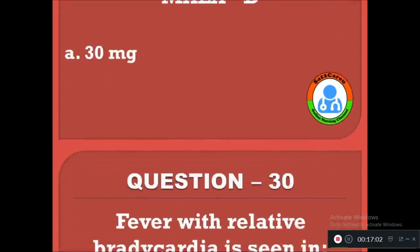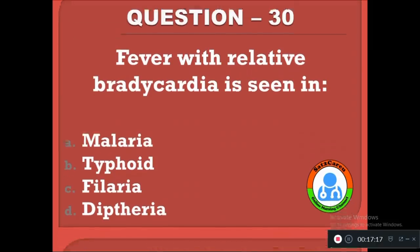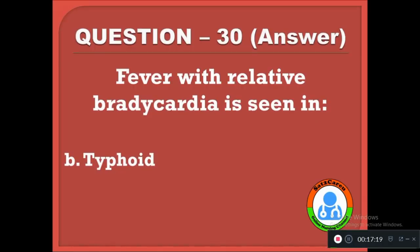Question 30: Fever with relative bradycardia is seen in — option A: malaria, B: typhoid, C: filaria, D: diphtheria. The correct answer is B, fever with relative bradycardia is seen in typhoid fever.